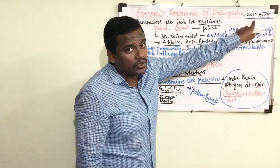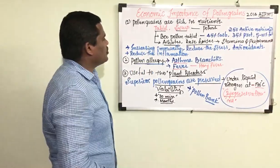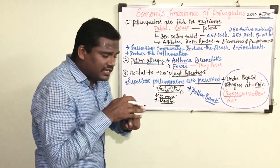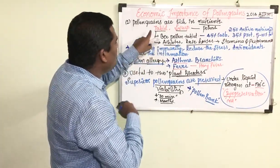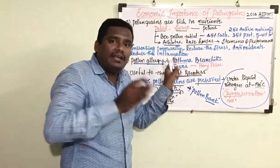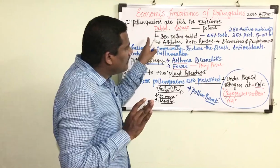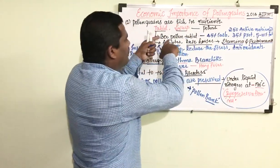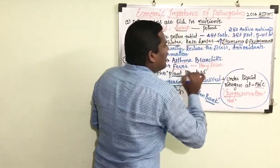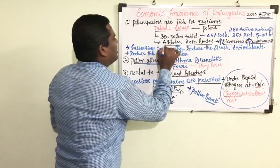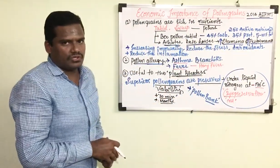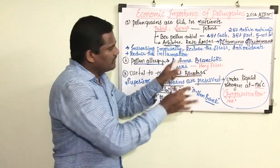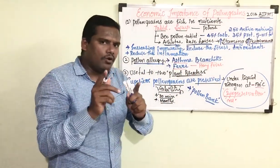As mentioned at the beginning, a question from this concept was asked in the 2014 AIPMT: why do athletes consume pollen tablets? The answer is to increase their stamina and performance — pollen tablets increase performance in athletes as well as in race horses. In our next video we will understand one more important concept from the same chapter. Till then, stay home, stay safe. Thank you.